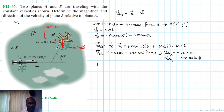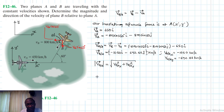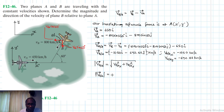Let's find the magnitude. The magnitude of VB/A equals the square root of (VB/A_x squared plus VB/A_y squared). That gives us the square root of (1050 squared plus 692.82 squared), which equals 1257.97 kilometers per hour.